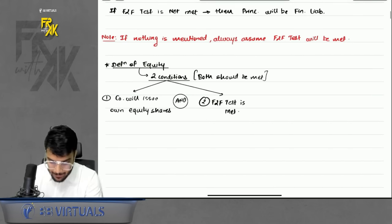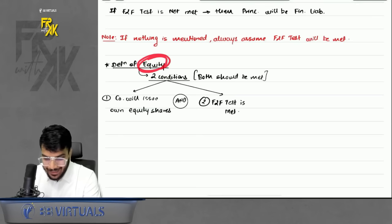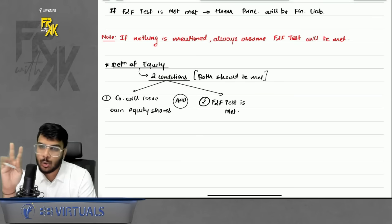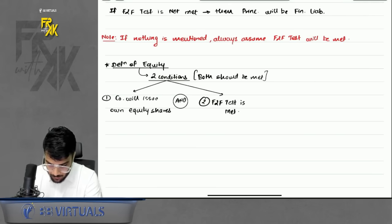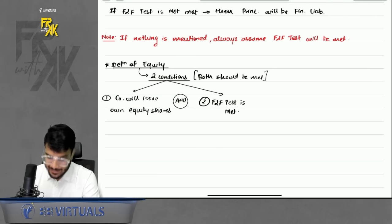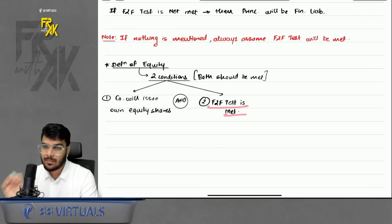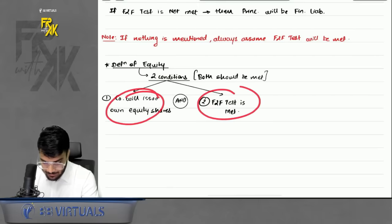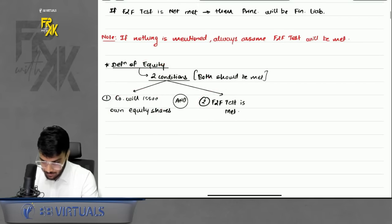For any element to be classified as equity, two conditions must be met: first, the company will deliver own equity shares for that element; and second, the fixed-to-fixed test must be met. Only if both conditions are satisfied will the element be equity.